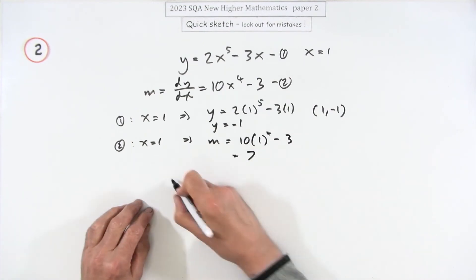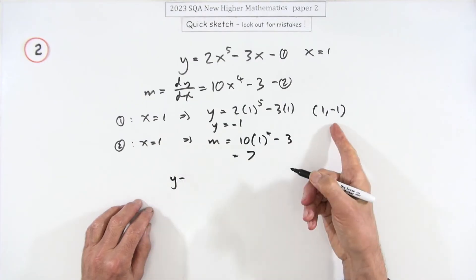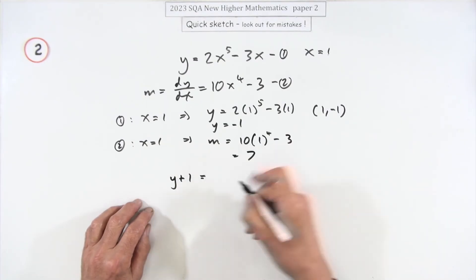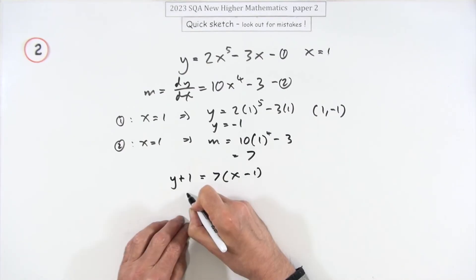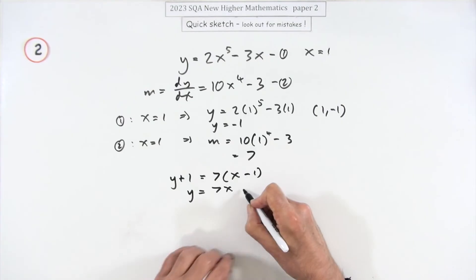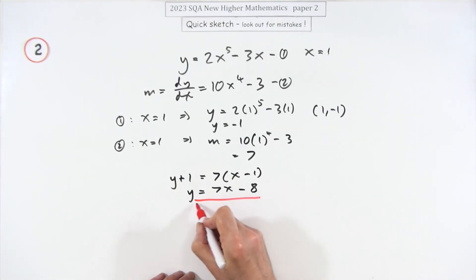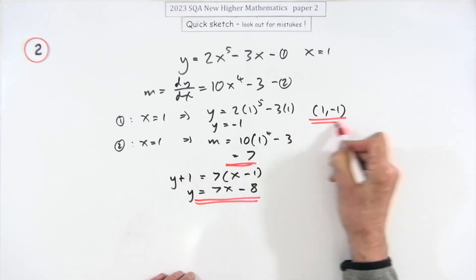Now you just put it all together. So y minus the y coordinate, I'll just put it as plus 1, is the gradient 7 times x minus the x coordinate. So y is 7x minus 7 minus another 1, minus 8. And that's it. Wasn't a lot to that for the four marks. Gradient 7, coordinate.